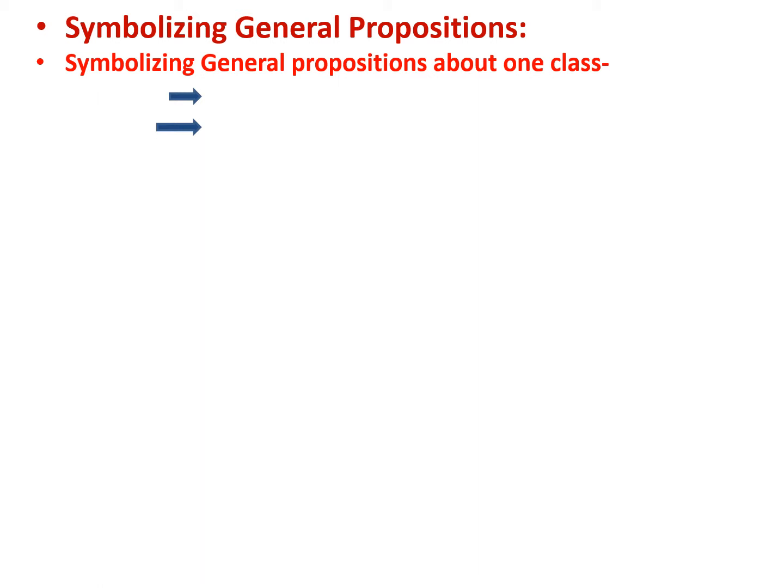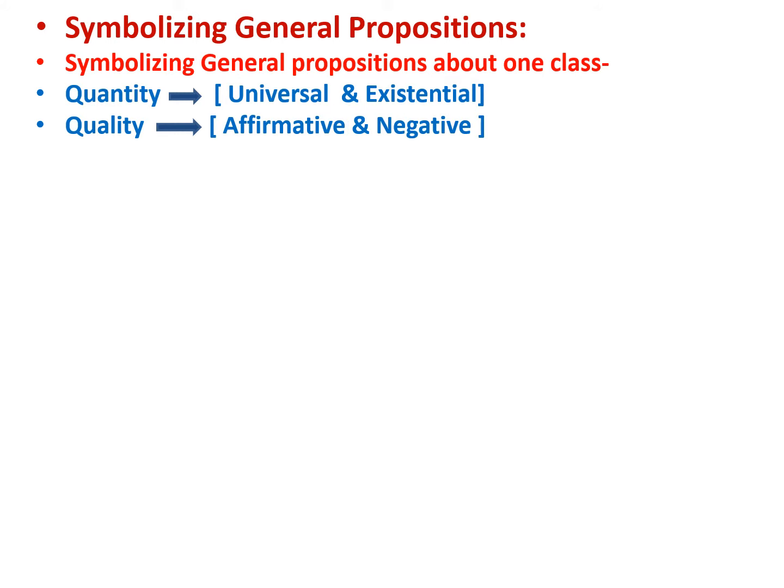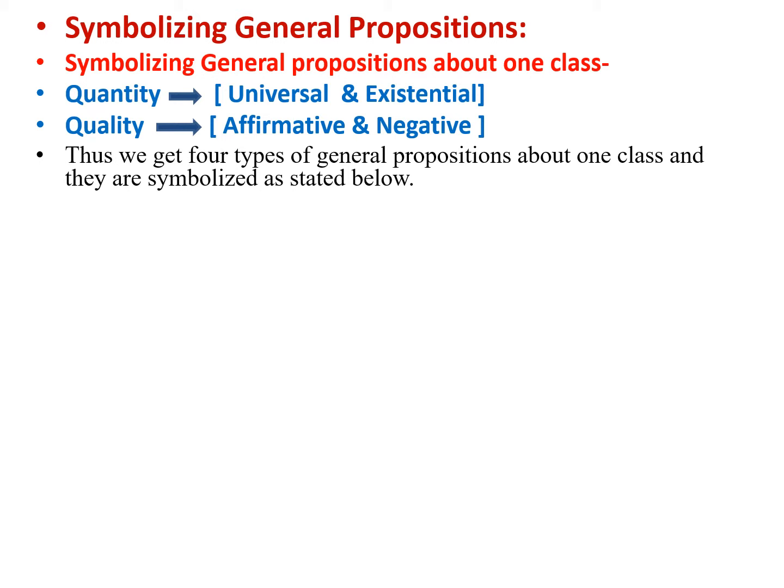Let us learn how to symbolize general propositions. General propositions are of two types: general propositions with one class and general propositions with two classes. On the basis of quantity, they are classified into universal and existential; and on the basis of quality, into affirmative and negative. Thus, we have four types of general propositions with one class.